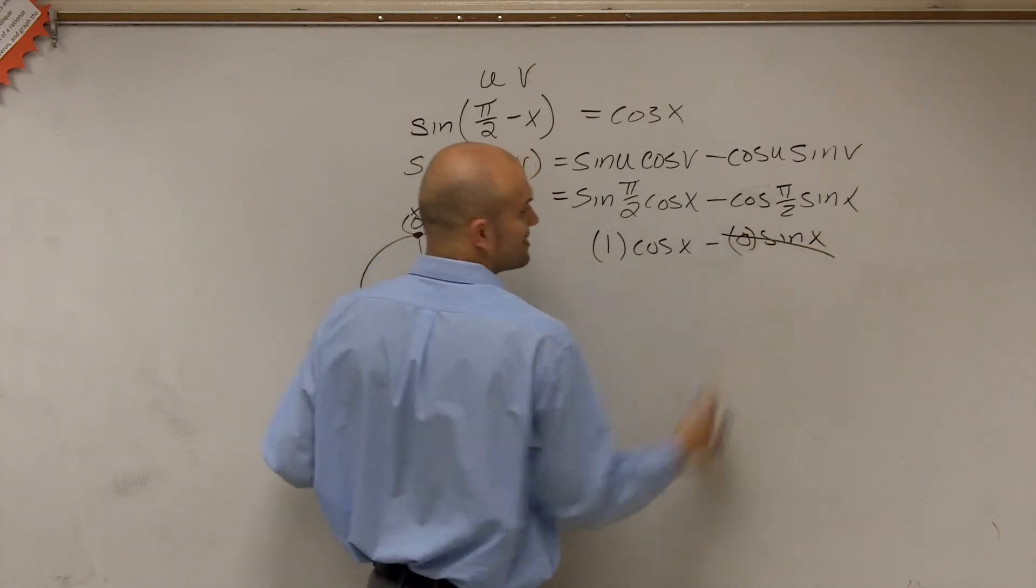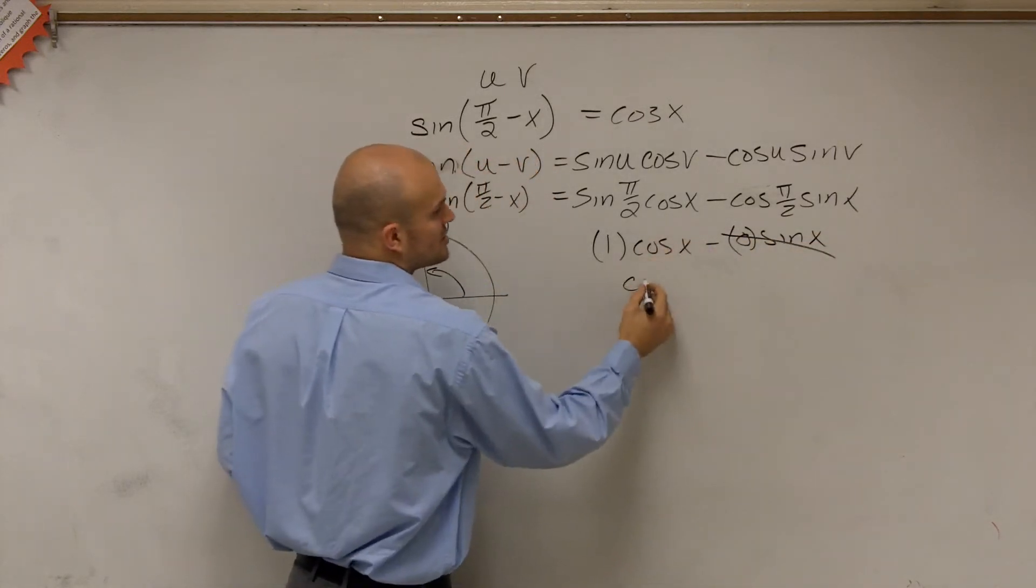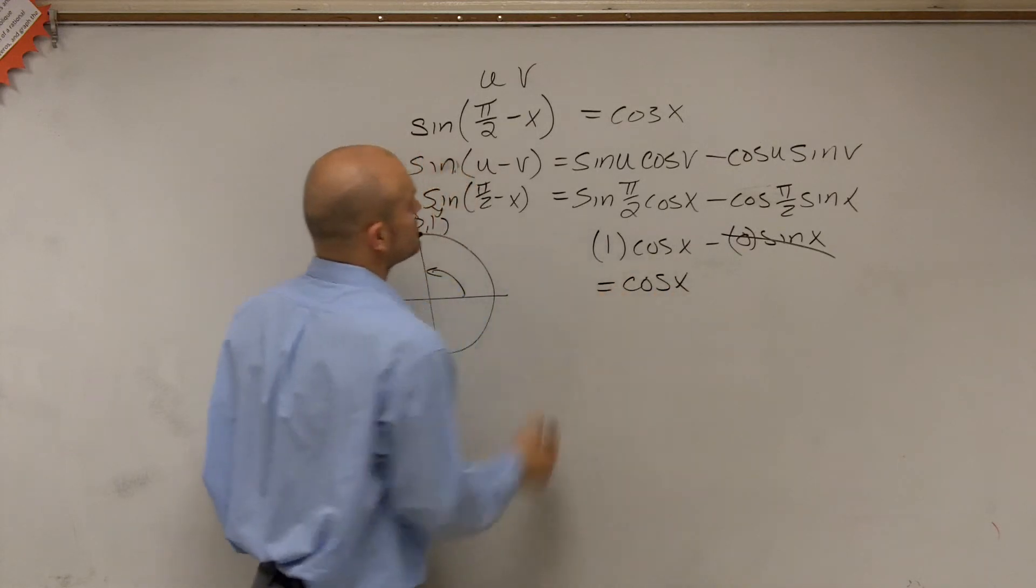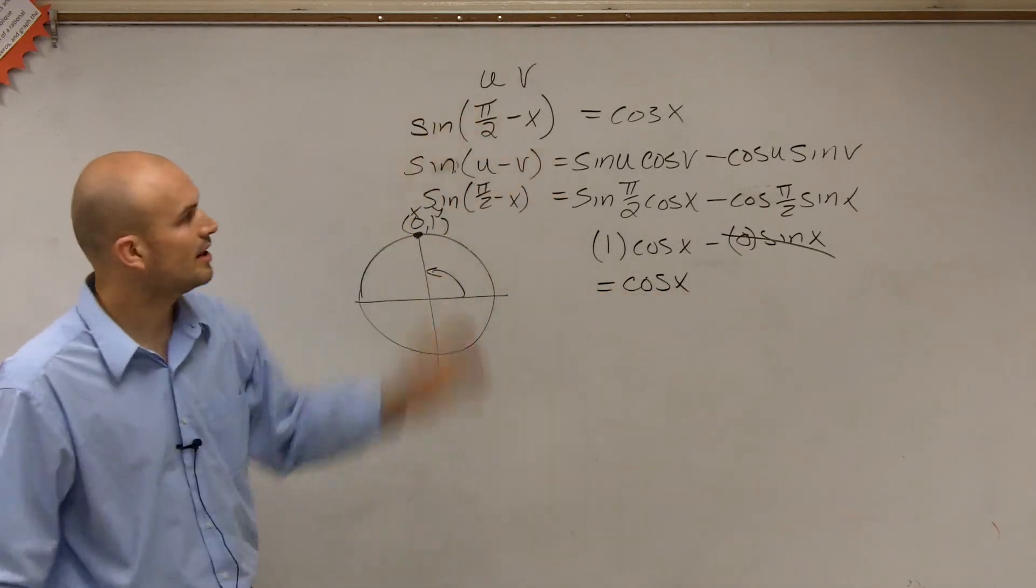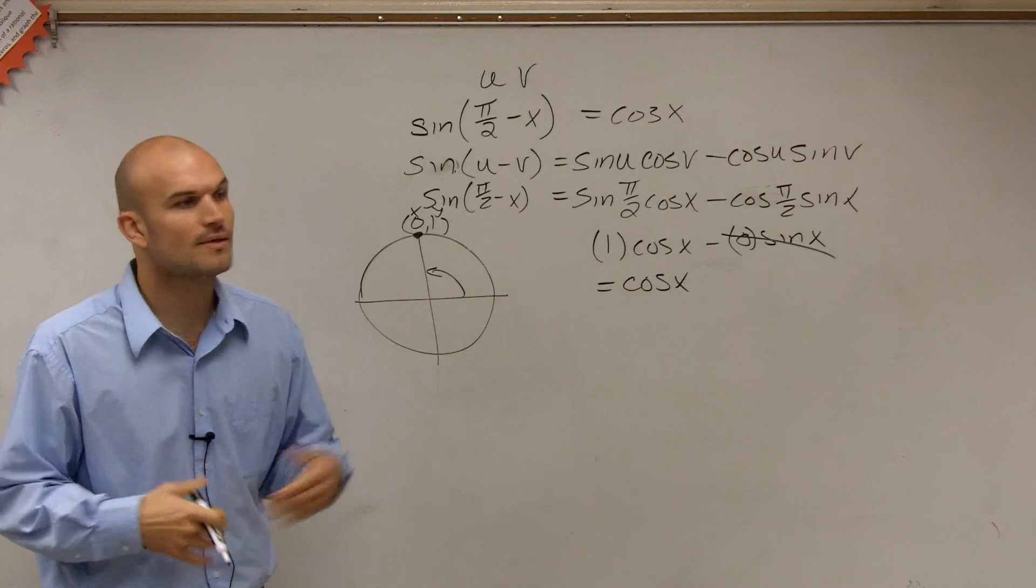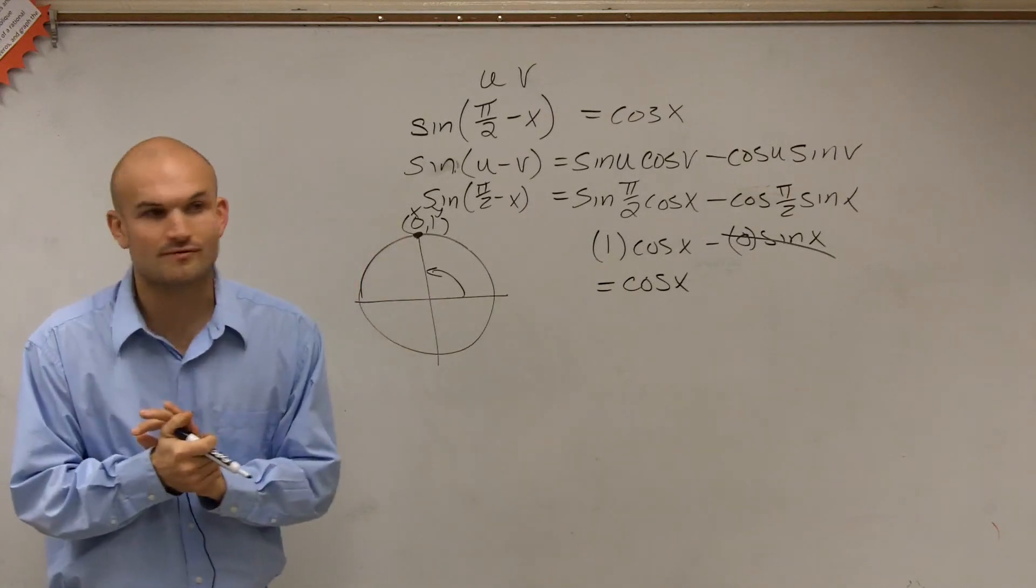Therefore, 0 times sine of x is going to multiply to give you 0, just leaving us with cosine of x, which we were able to confirm in our first part of the problem. So that is how you do the difference formula for the sine function.